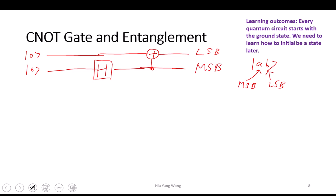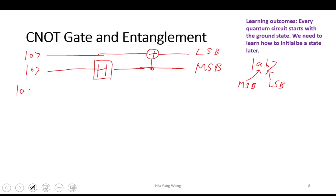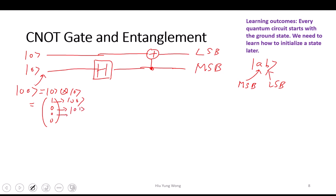Let's trace through the circuit. At the first stage, the input is |00⟩ — the tensor product of |0⟩ and |0⟩, most significant bit zero and least significant bit zero. In matrix form this is the column vector (1, 0, 0, 0), with one component of |00⟩ and zero components of |01⟩, |10⟩, and |11⟩.